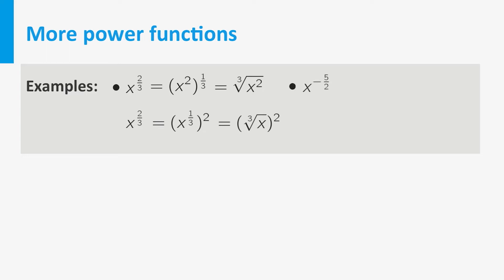And x to the power minus 5 over 2 is equal to 1 over x to the power 5, to the power 1 half, which is 1 over the square root of x to the power 5. On the other hand, it is equal to 1 over the fifth power of the square root of x.